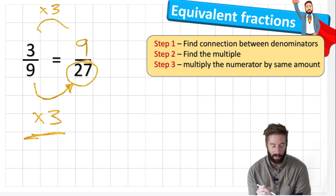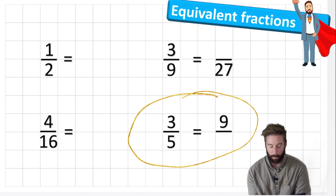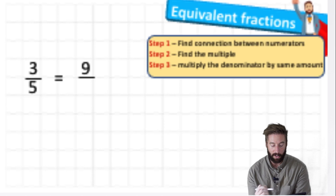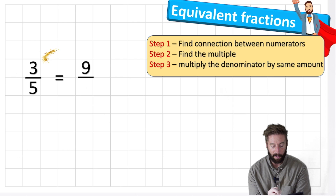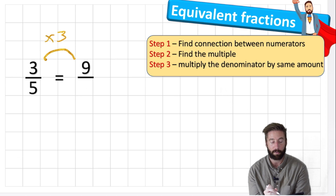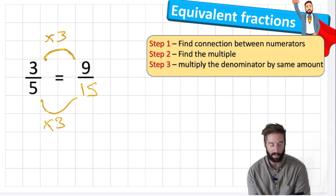Nice and simple. Now this one is slightly different - we've been given the other numerator and it's a nine. Step one: find the connection between the numerators this time. Getting from three to nine is in the three times table - three, six, nine - so it's multiplying by three. Whatever I've done to the numerator I now need to do to the denominator. Five times three is fifteen. Nine fifteenths are the same as three fifths.